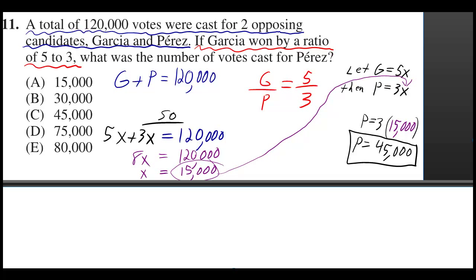I took the sentence in blue and I wrote the equation in blue. The total number of votes means we must add Garcia and Perez's votes. So G will be Garcia's votes, P will be Perez's votes. And they told us the total was 120,000. So G plus P equals 120,000.